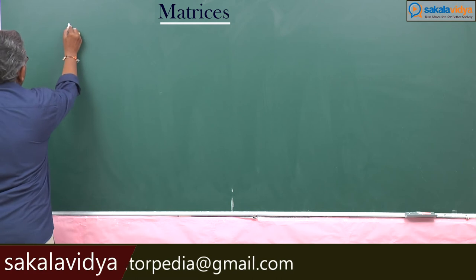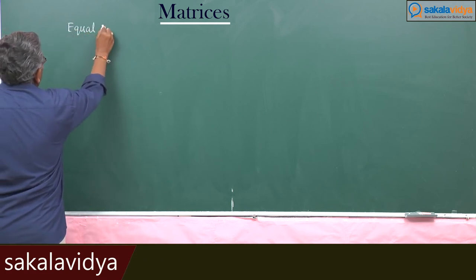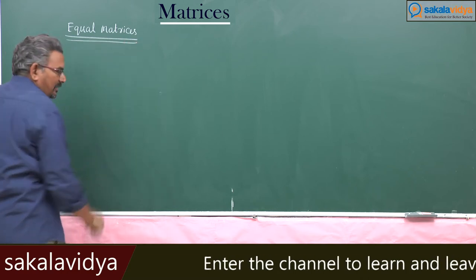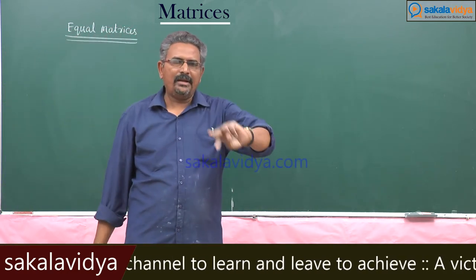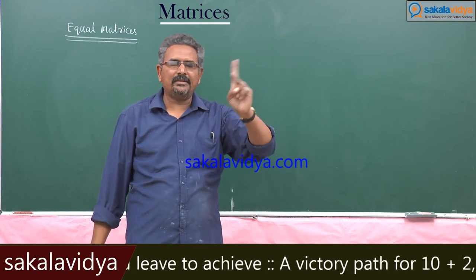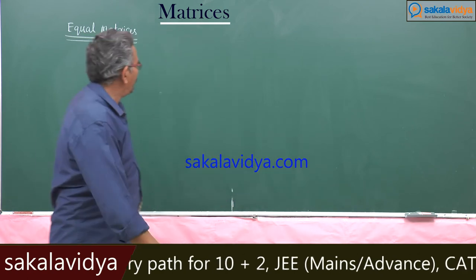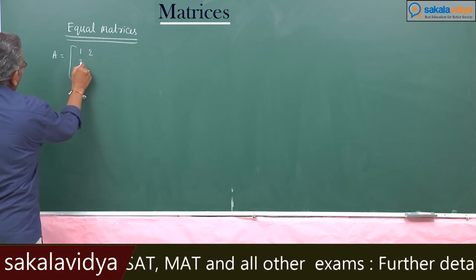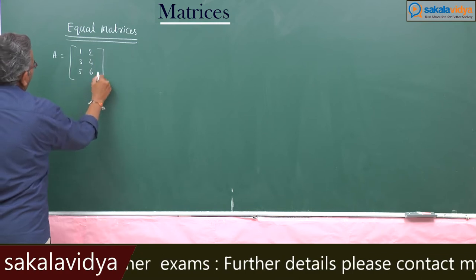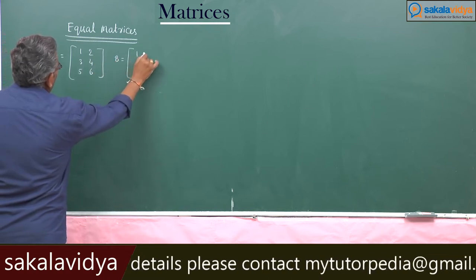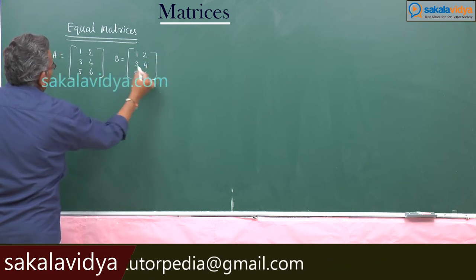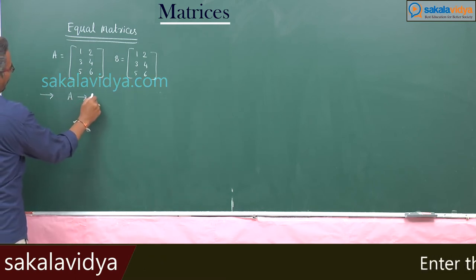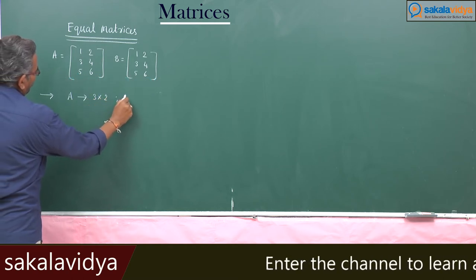Equal matrices, or equality of matrices. How do we compare two matrices? Can one matrix be greater than or lesser than another matrix? Consider two matrices A = [1, 2; 3, 4; 5, 6] and B = [1, 2; 3, 4; 5, 6]. First, check the orders of these two matrices. The order of A is 3 by 2, and the order of B is also 3 by 2.